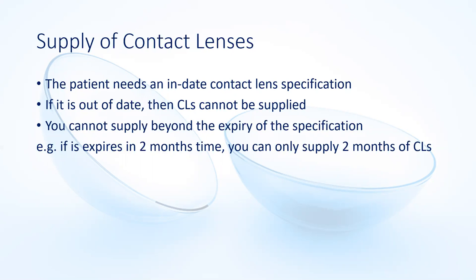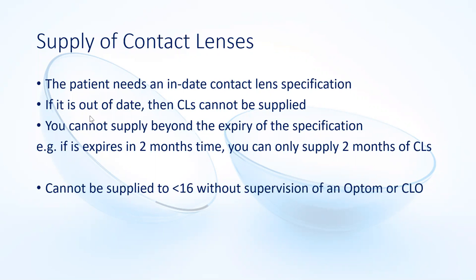If a patient only has two months left on their specification before it expires, under the rules we shouldn't really supply them with more than two months' worth of contact lenses. In practice you have to be a bit more flexible, particularly when supplying monthly lenses that might come in a three-month pack. At the moment during the pandemic, we are in a lot of places supplying people beyond their specification, thanks to a temporary change in guidance from the General Optical Council. But only a registered professional — an optometrist or a contact lens optician — can make that decision and legally sign it off. Similarly, if you're supplying anybody under the age of 16, that has to be under the supervision of an optometrist or contact lens optician, who needs to be on the premises and sign off the order.